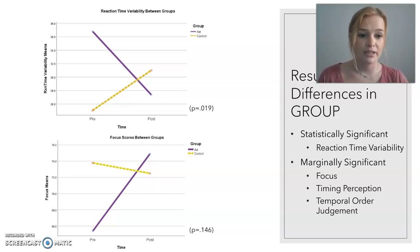I also found some marginally significant differences in the sub tests of focus, timing perception, and temporal order judgment. Focus is also computed from the variability in reaction time tasks, and it is seen in the bottom graph looking at the focus means between the experimental and the control group.